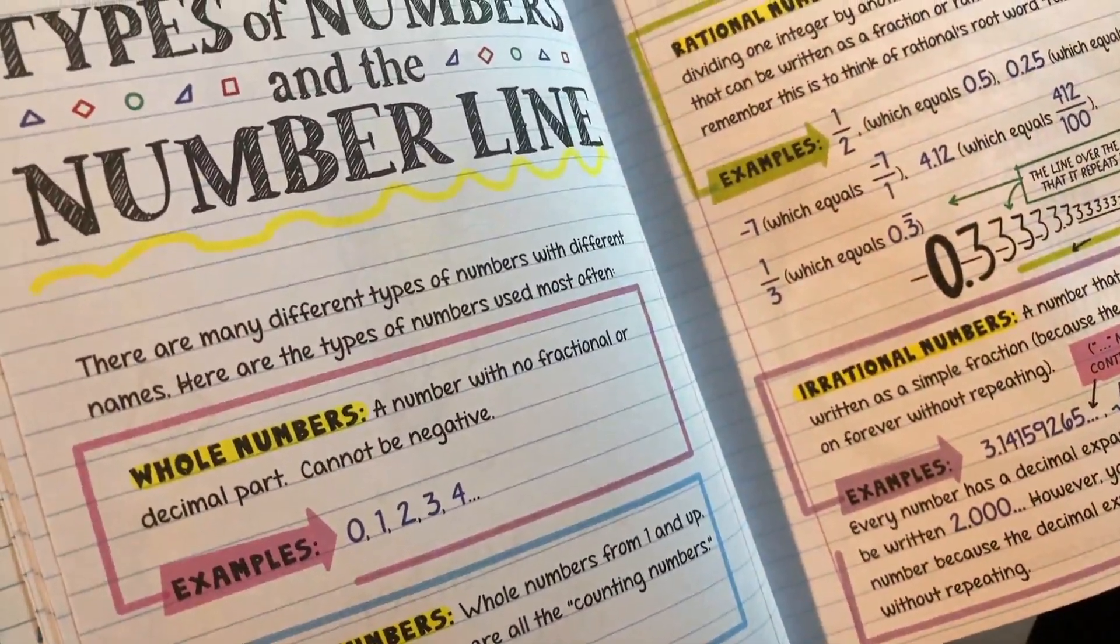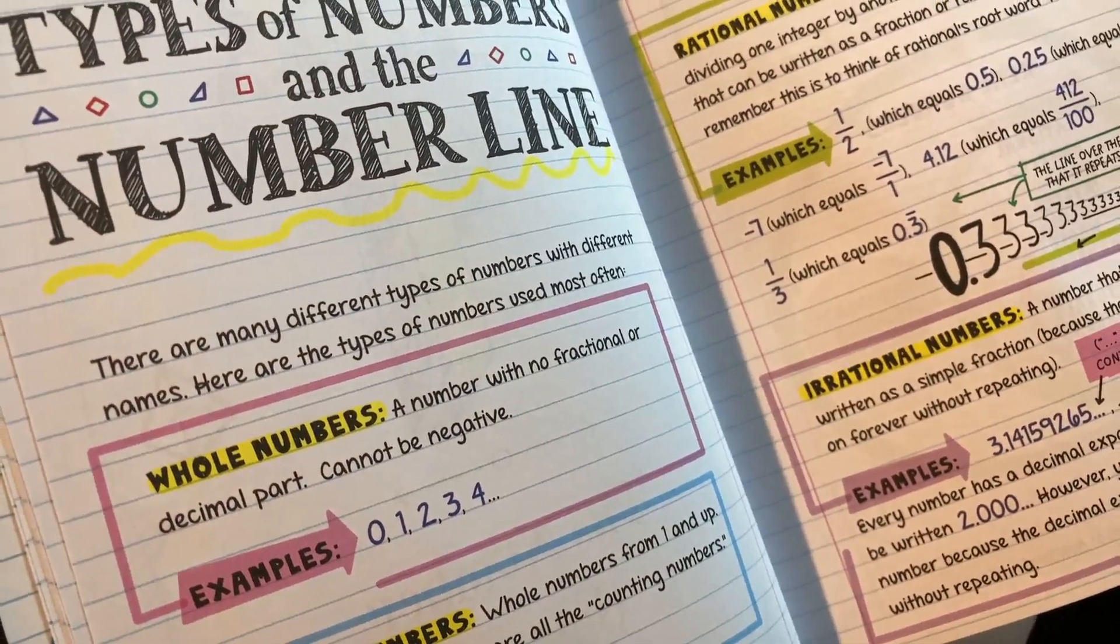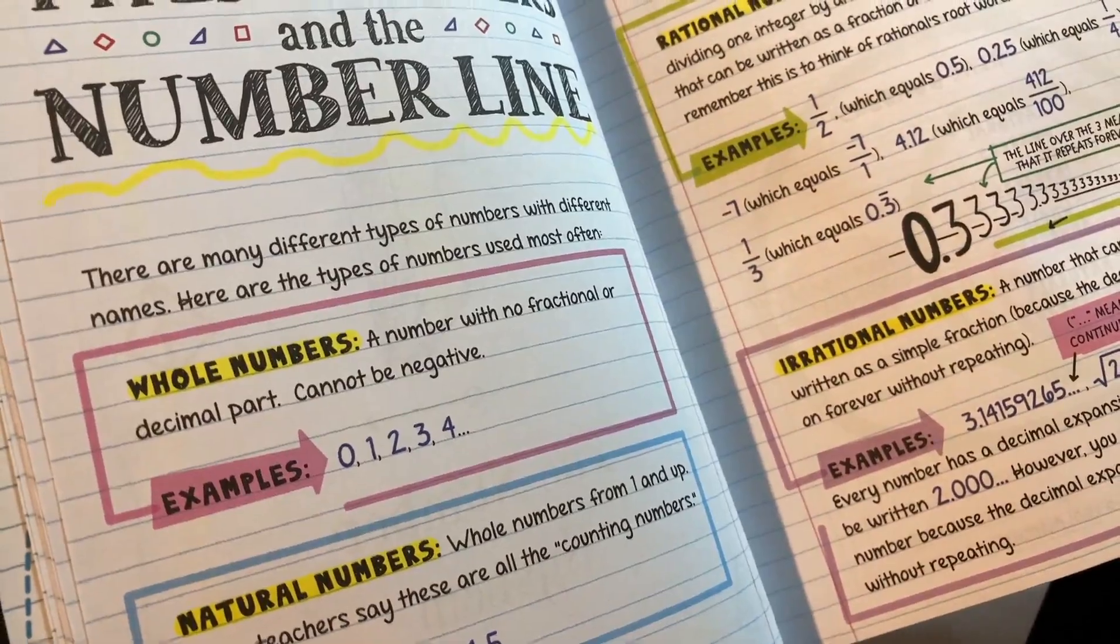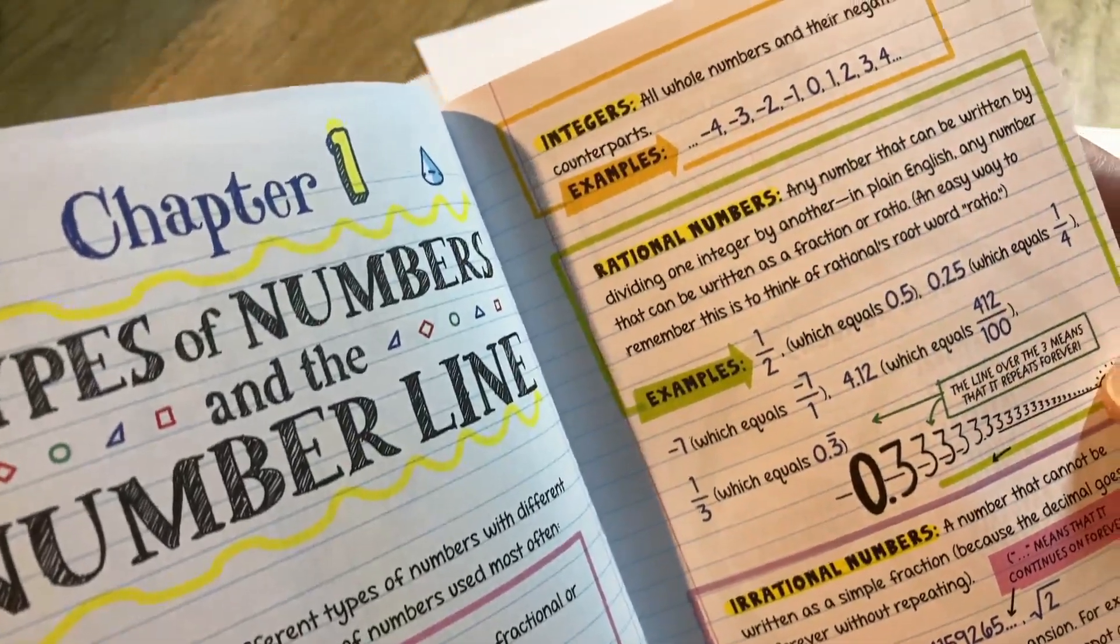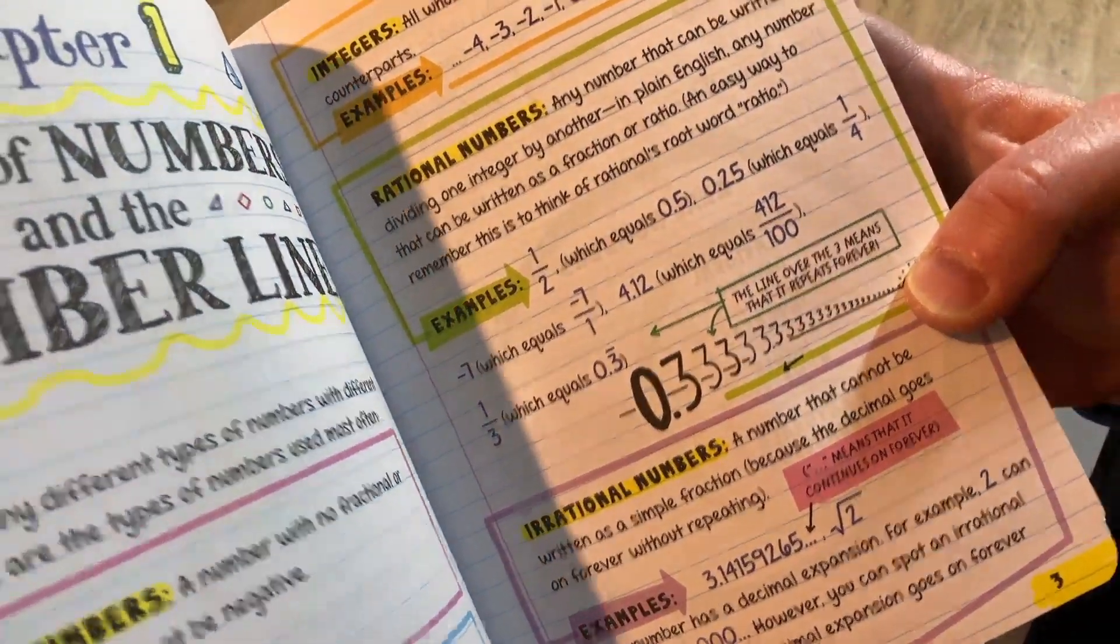There are many different types of numbers with different names. Here are the types of numbers used most often. It talks about the whole numbers, the natural numbers, integers, rational numbers, irrational numbers.